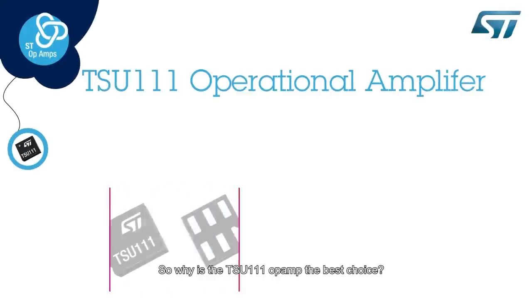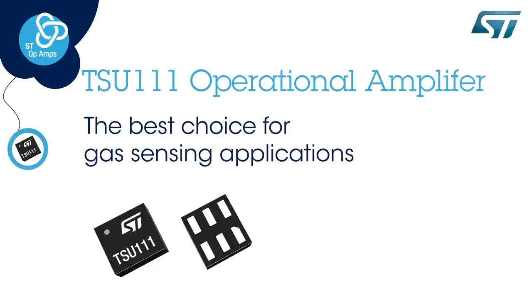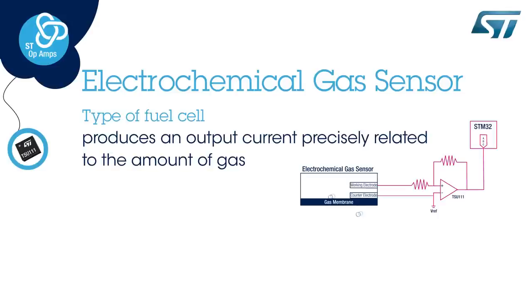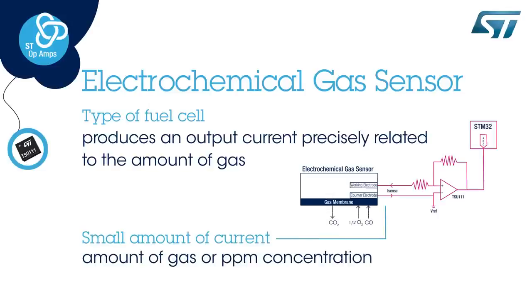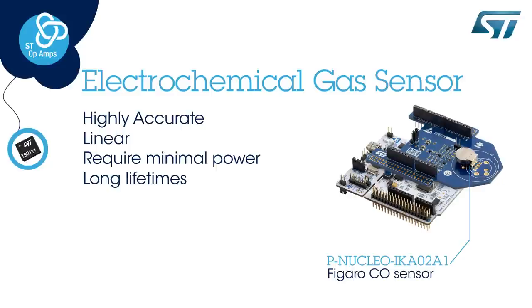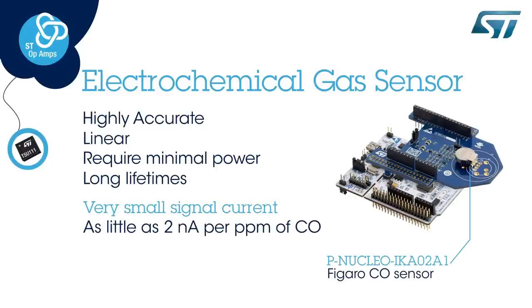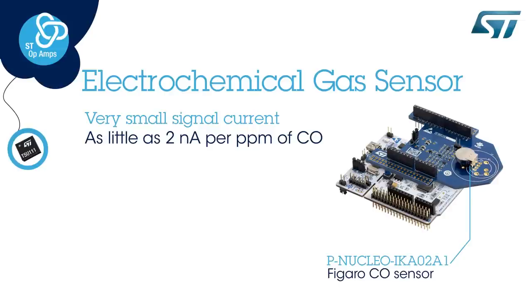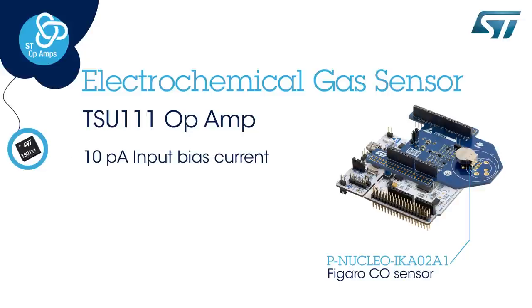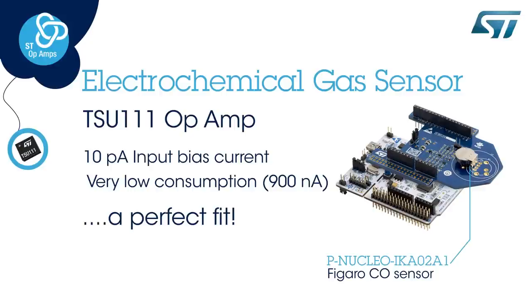Now the question is, why is the TSU-111 operational amplifier among so many components ST has in its portfolio the best choice? The answer is very simple. The electrochemical gas sensor is a type of fuel cell designed to produce a signal current which is precisely related to the amount of gas in the environment, the so-called PPM concentration. The electrochemical cells are highly accurate, linear, require minimal power, and have long lifetimes, but produce a very small signal current — as little as 2 nanoamps per 1 PPM of carbon monoxide concentration. The ST's TSU-111 operational amplifier, with its only 10 pA of input bias current and a very small power consumption of only 900 nanoamps, is a perfect fit for battery-operated carbon monoxide detectors and even NO2 or O2 detectors.